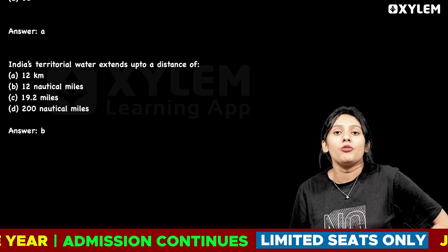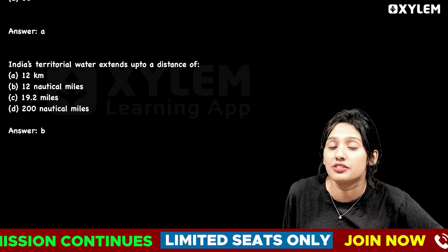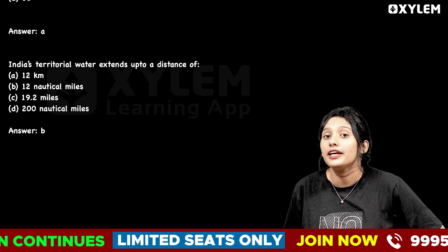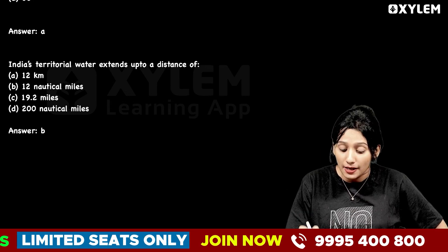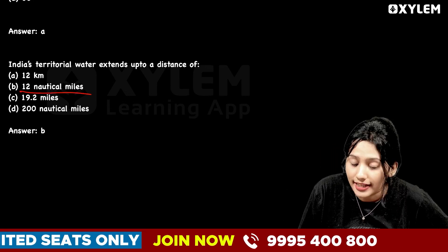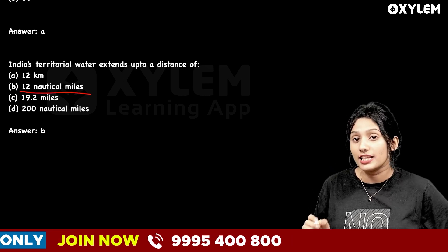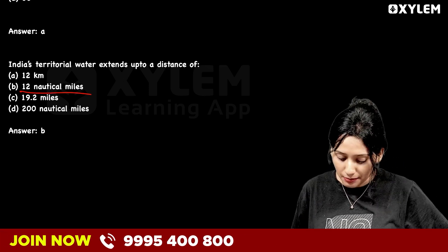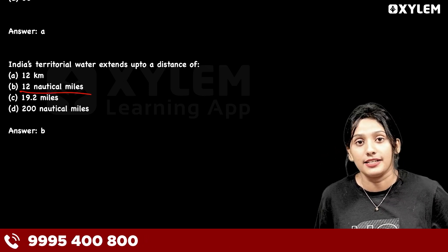Next question: India's territorial water extends up to a distance of how many nautical miles? The answer is 12 nautical miles. Option B is the correct answer.